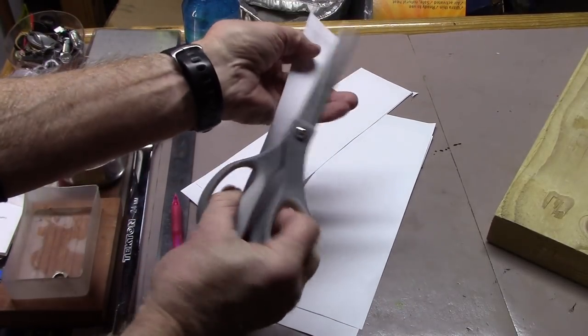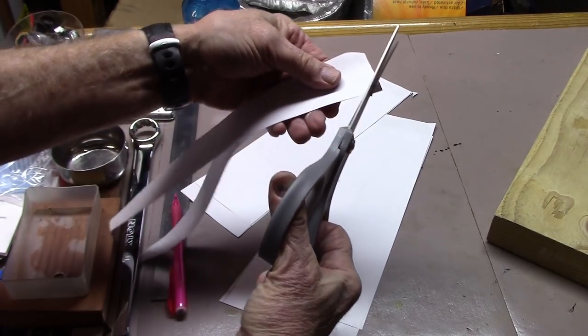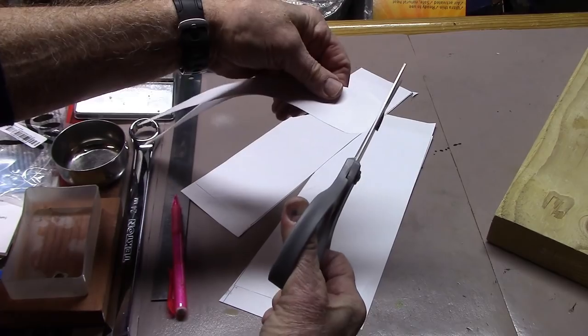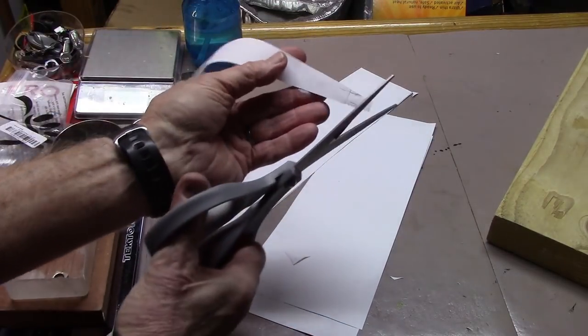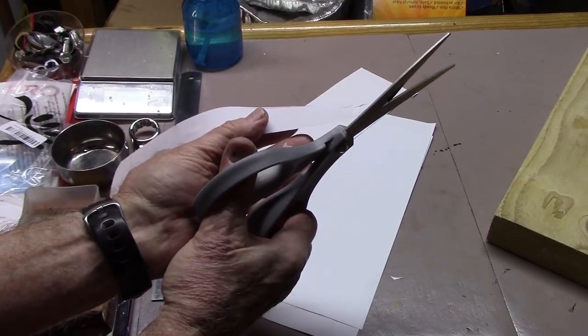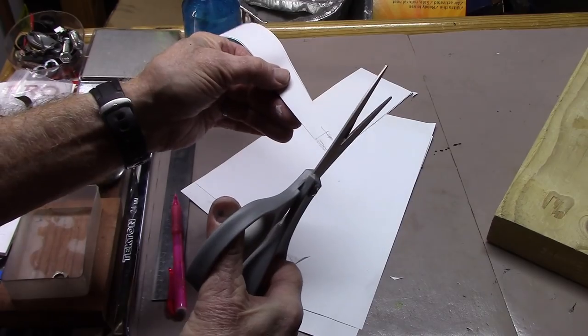And make sure that we round off the edges because any points on the tape, the pattern or tape, will catch and may peel off the tape from the frame that we're trying to cover.